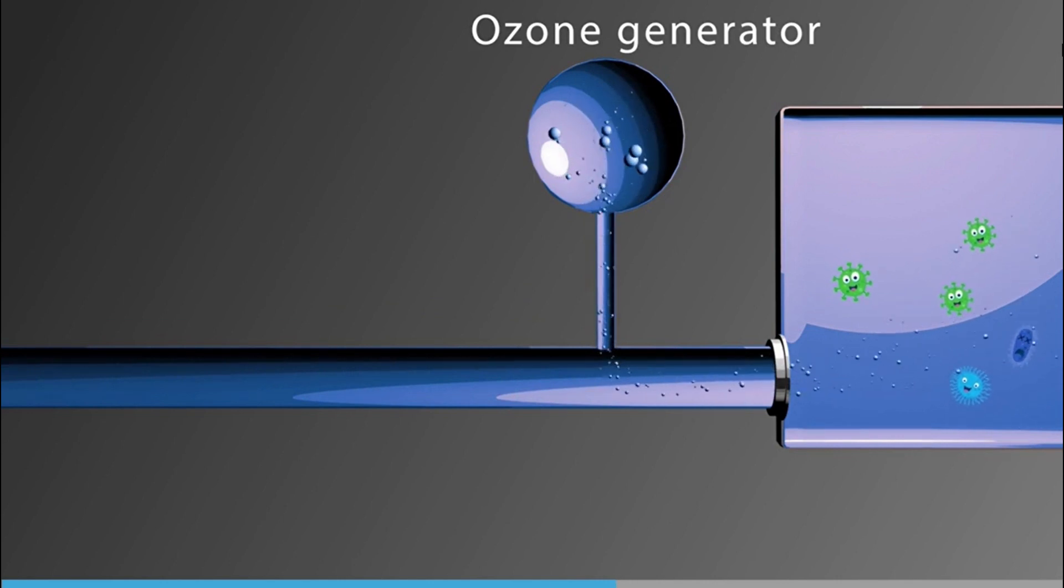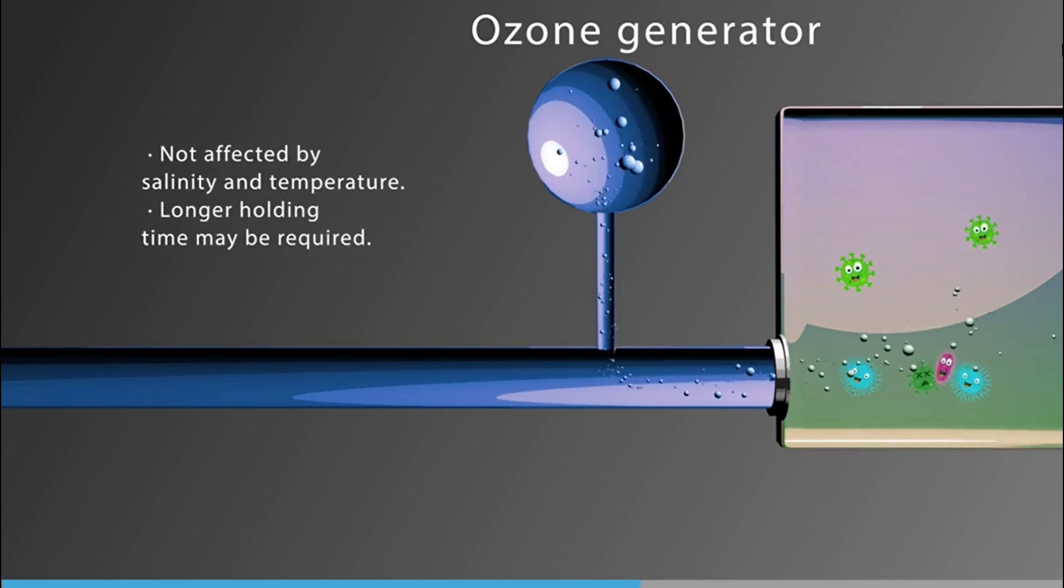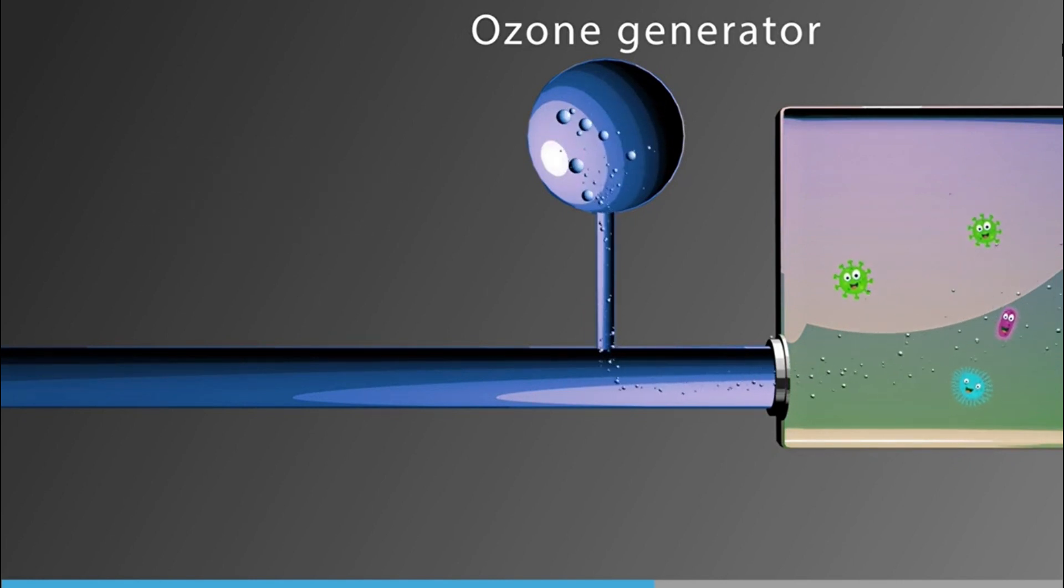Waters with high particulate and organic matter require higher doses of ozone to ensure sufficient disinfection. Salinity and temperature are not obvious factors affecting the efficiency of ballast water treatment systems employing ozonation, however longer holding time may be required.